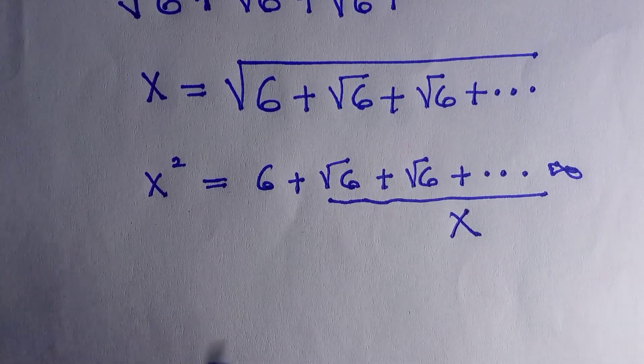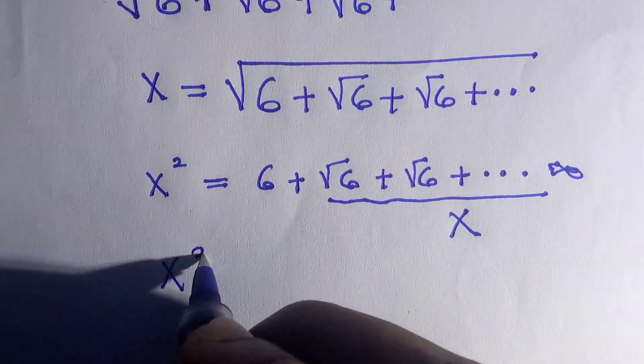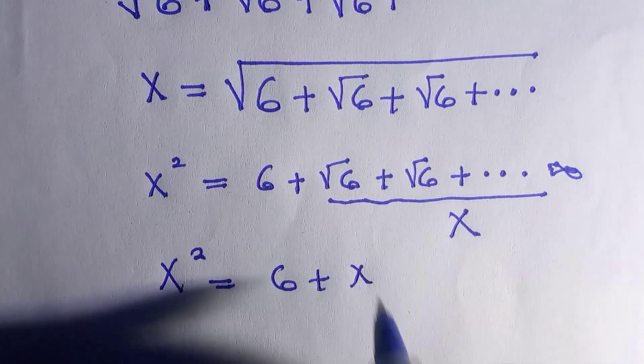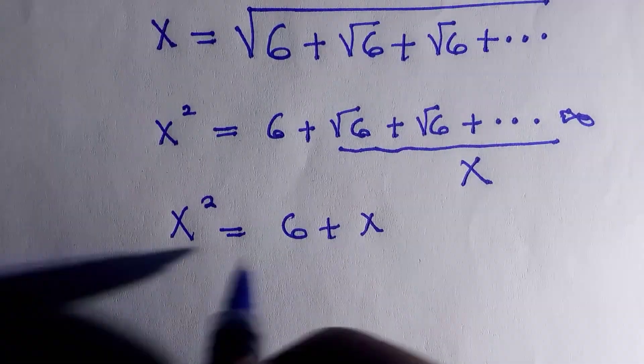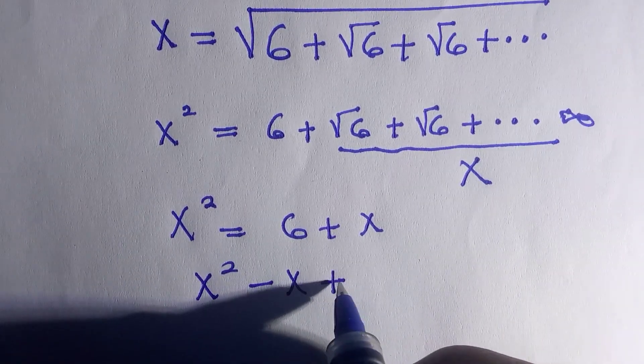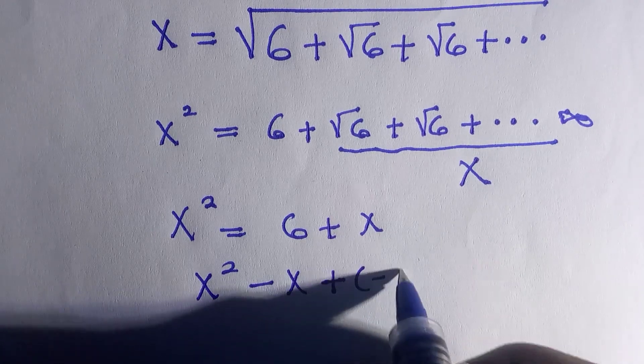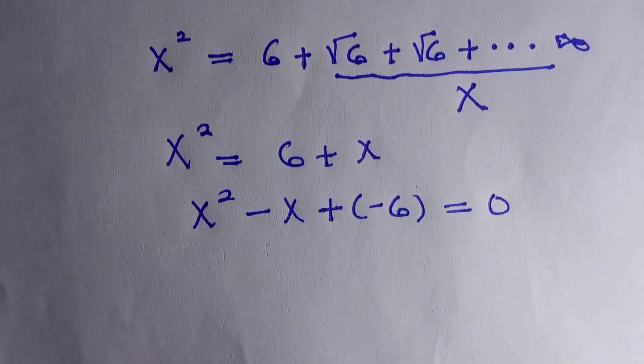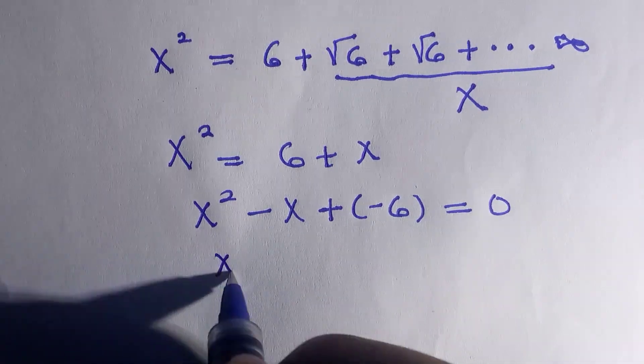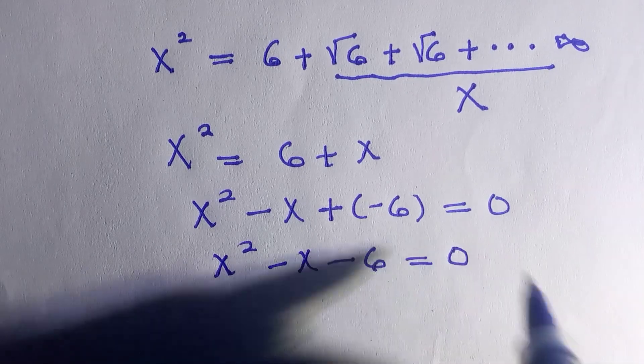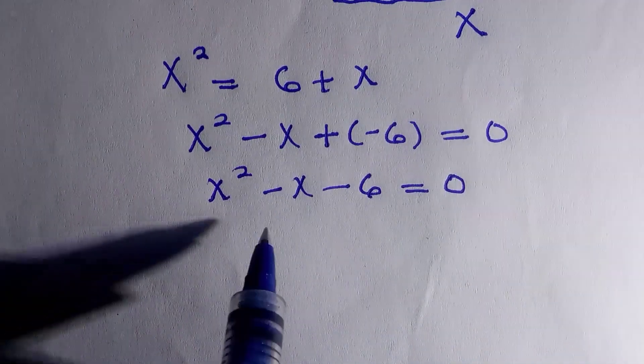Then by replacing all this with x we have x raised to the power 2 equals 6 plus x. By taking the like terms we have x squared minus x plus bracket minus 6 everything equals zero. By rewriting this we have x squared minus x minus 6 equals zero. Here is a quadratic equation.